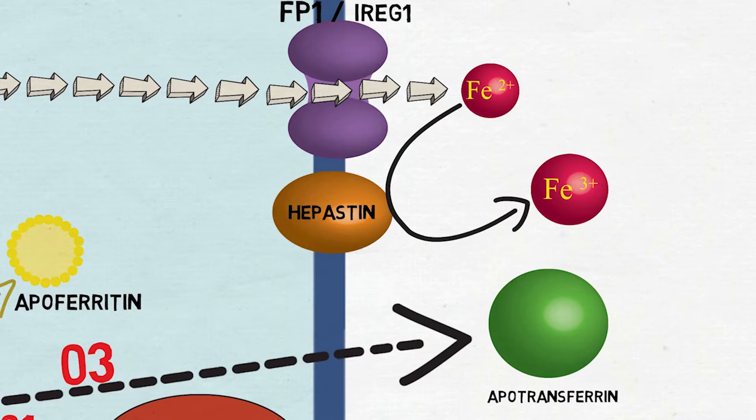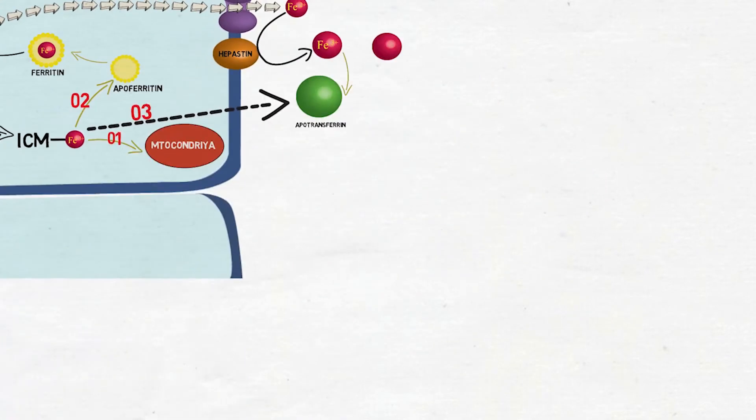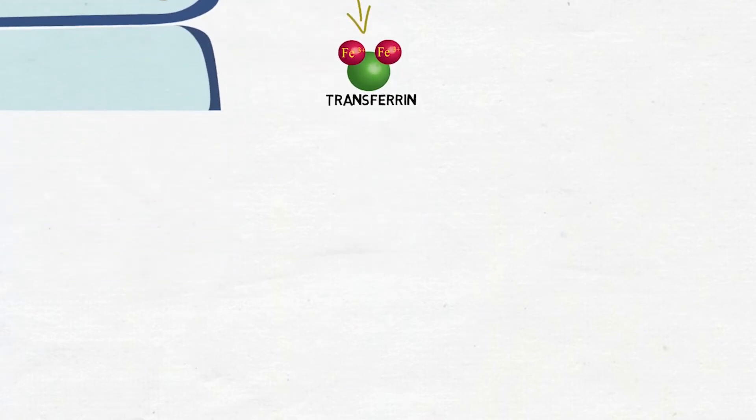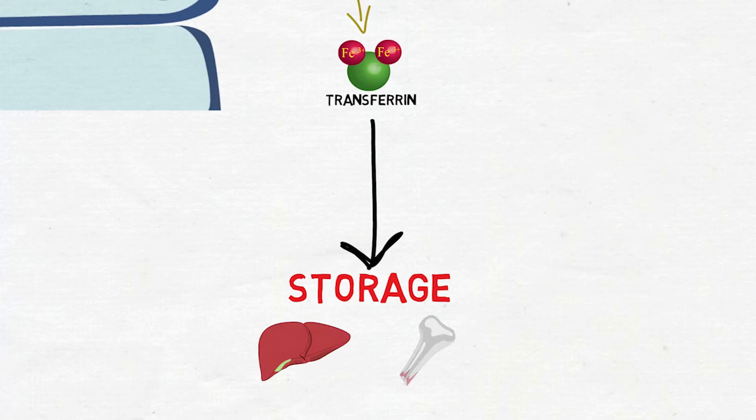As Fe3+ cannot transport around the body itself, there is a need for a transporter molecule which is known as apotransferrin. Two ferric ions bind to one apotransferrin molecule to form transferrin. Finally, transferrin molecule transports iron to target storage like liver and bone marrow via bloodstream.